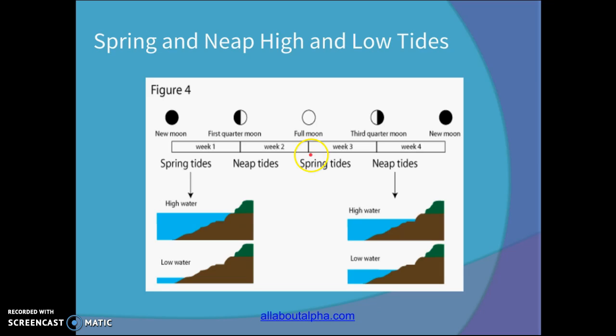Then when you hit the full Moon, another spring tide. Third quarter Moon, neap tide. And then when you get back to a new Moon, you hit another spring tide. So they alternate throughout the Moon cycle.